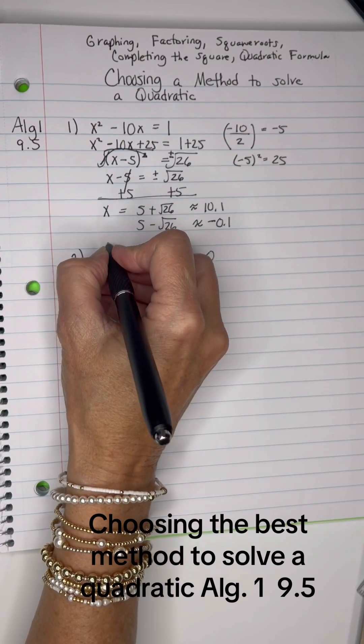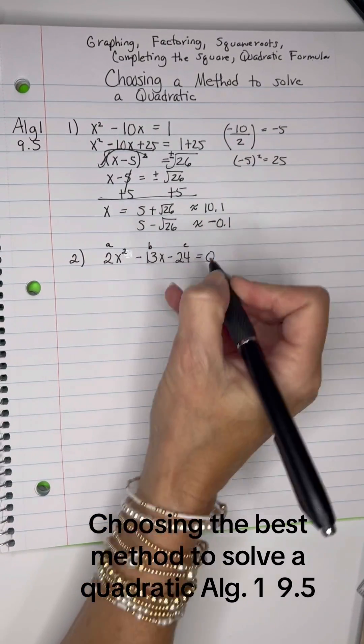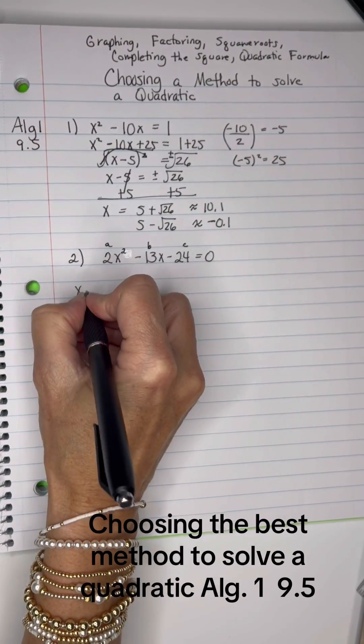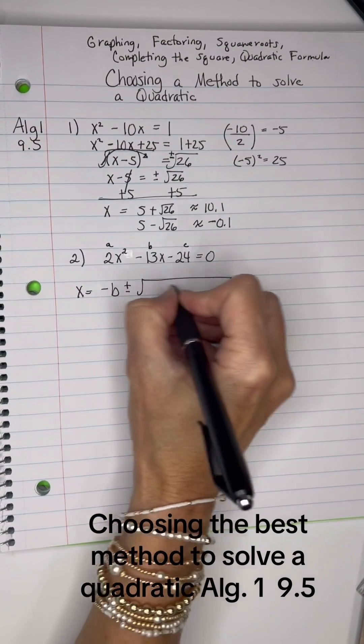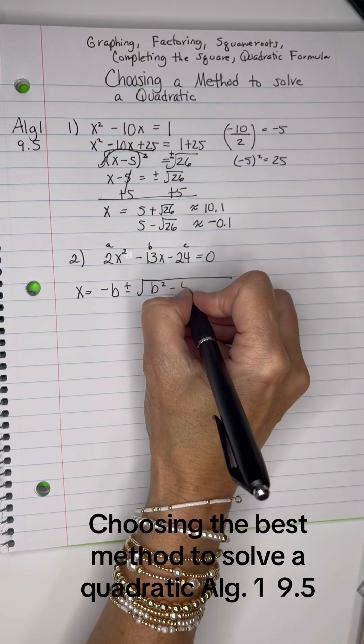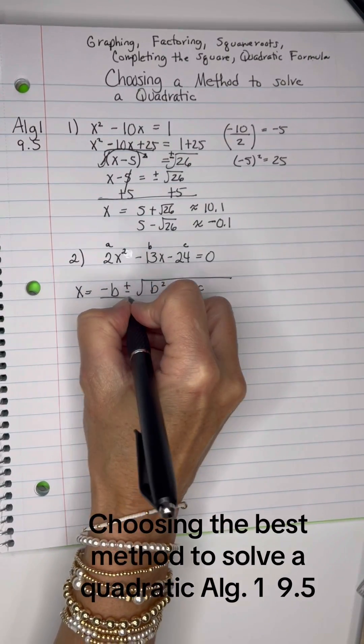So here's my a, here's my b and here's my c. X equals negative b plus or minus square root b squared minus 4ac all over 2a.